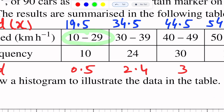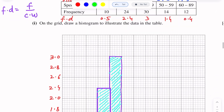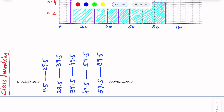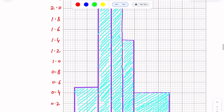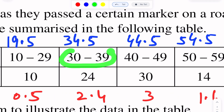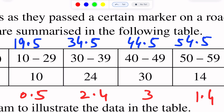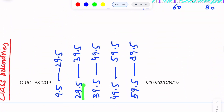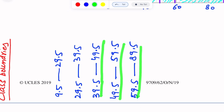For the first interval, 10 to 29, the lower class limit is 10 and the upper class limit is 29. To find the lower class boundary, we subtract 0.5 from 10, and to find the upper class boundary, we add 0.5 to 29. So the boundaries of the first interval are 9.5 to 29.5. For the next interval, 30 to 39, the boundaries are 29.5 to 39.5. We find class boundaries for all intervals in the same way.